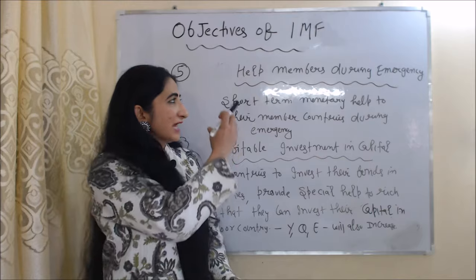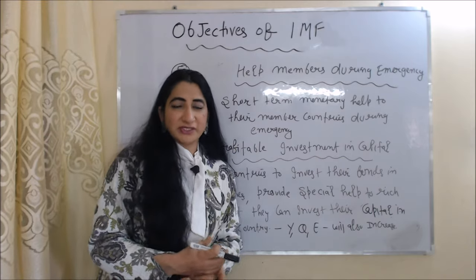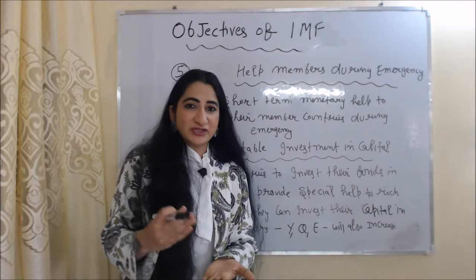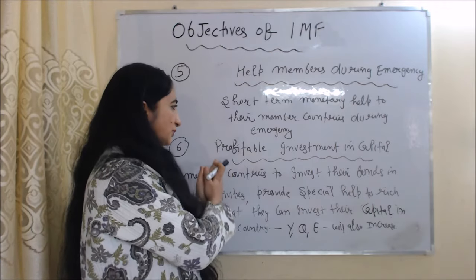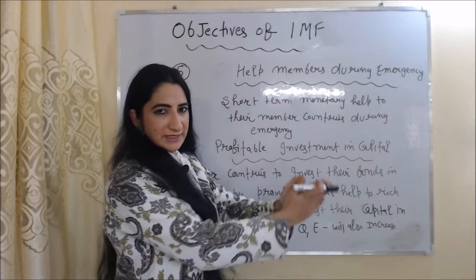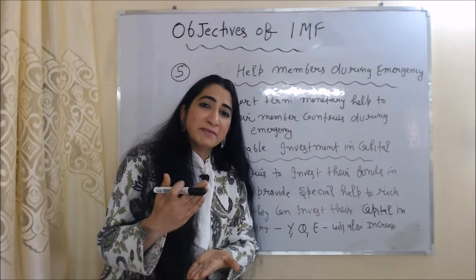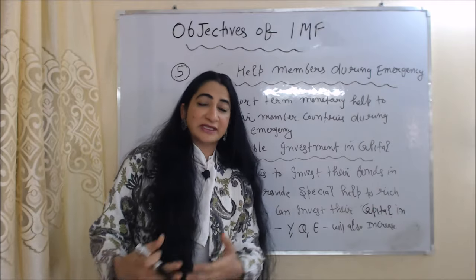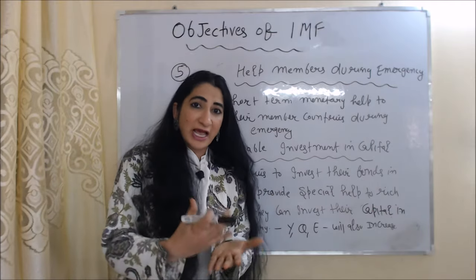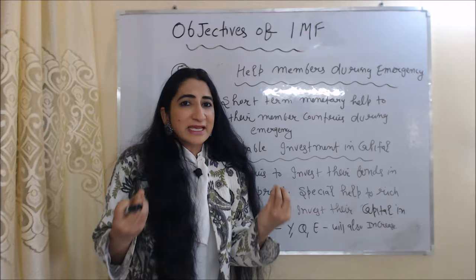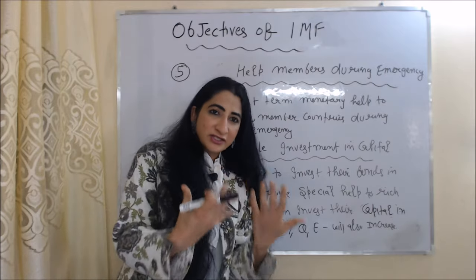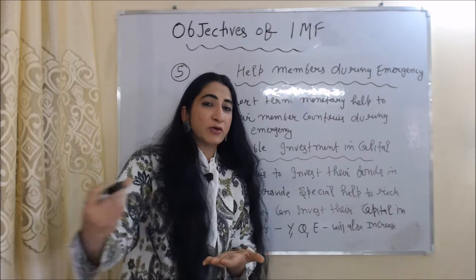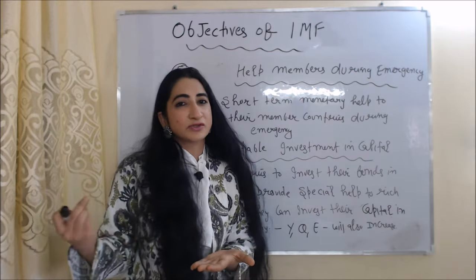The next objective is to help members during emergency. IMF provides short-term monetary help to their member countries during emergency. The next objective is profitable investment in capital. IMF helps their member countries to invest their money in profitable activities. That's why IMF provides special help to rich countries so that they can invest their money in poor countries. When rich countries invest their money in poor countries, output, income and employment also increase in the poor country.